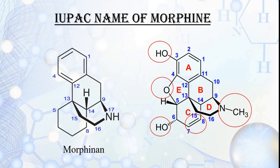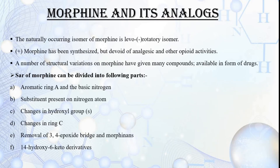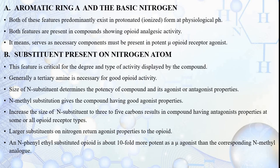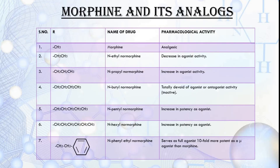The levo form of morphine is commonly found in nature. The dextro form, which was synthesized, was devoid of analgesic and opioid activity. Both the aromatic ring A and basic nitrogen show opioid analgesic activity and exist in protonated form. Substitution on the nitrogen atom is important as it determines the type of activity. For good opioid activity, a tertiary amine is necessary. With a methyl group, the drug is morphine with analgesic properties; a butyl group inactivates it; pentyl and hexyl groups increase potency as agonists.